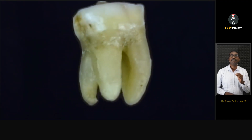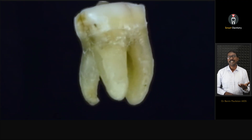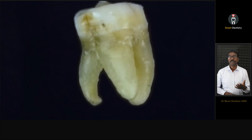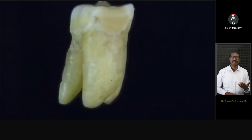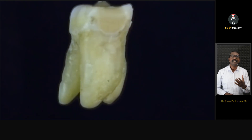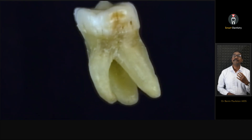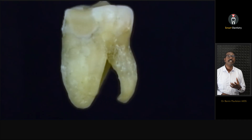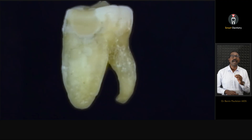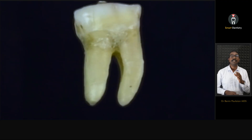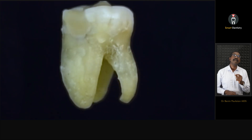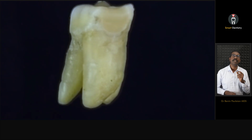If you haven't done a root canal treatment in a tooth with radix endomolaris, then probably you would have missed so many teeth with radix. It is quite common, accounting for around 3 to 22 percent of mandibular first molars. Especially in the case of Asian population, it is very very common. Let's see in detail how to do root canal treatment and the protocols we have to follow when treating a tooth with an extra distolingual root.